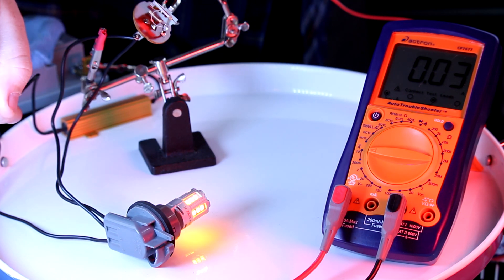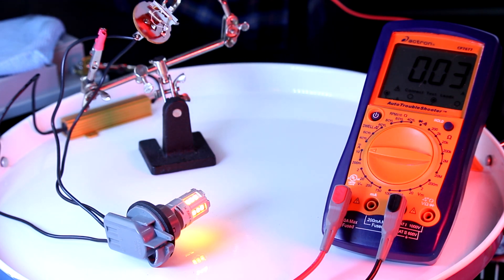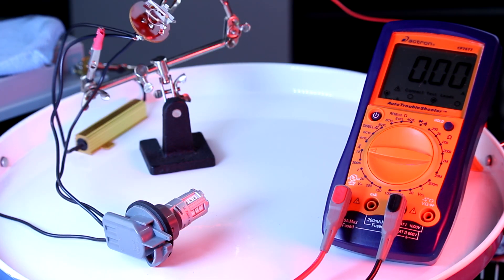I'm going to disconnect this and then wire up this resistor in parallel again and see what happens. Let's do the lights first. The lights are on, but the flasher isn't working. Let's plug in that resistor and see what happens.